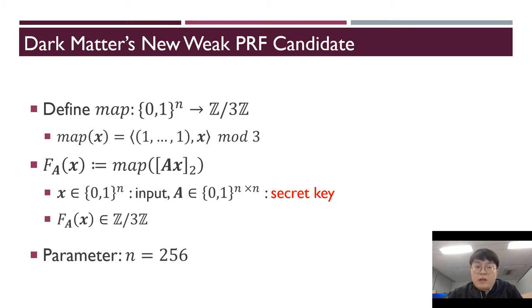First, we will introduce dark matter's new weak PRF candidate. Before we define weak PRF, we define the map. The map is the function that takes an n-bit input and simply computes the sum modulo 3. The secret key is a matrix A, which is chosen uniformly at random from n-by-n matrices. Weak PRF is very simple. They multiply A and input x modulo 2 and apply the function map. They suggest parameter n is 256.